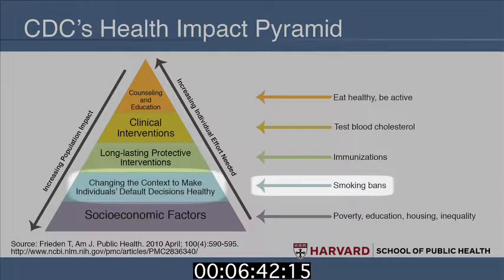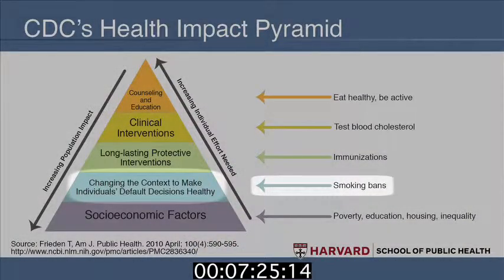Then we go down one level more to changing the context to make individuals' default decisions healthier. There's a branch of economics that focuses on this called behavioral economics, which has become very popular over the past five to ten years, with roots going back to the 1970s. It says we need to create an environment where it's easier for people to do the things that make sense. For example, if you put the healthy foods at eye level in a supermarket and the unhealthy stuff later on, people are more likely to make the better choice.